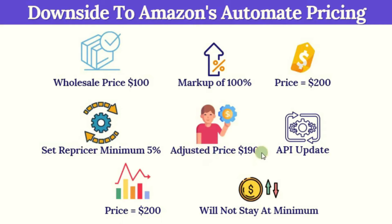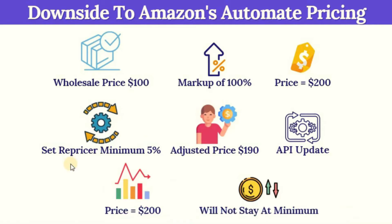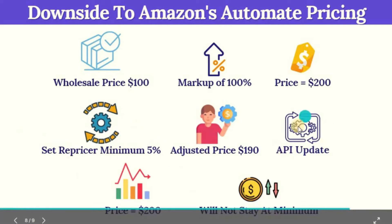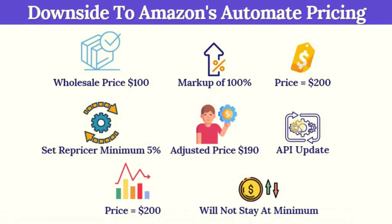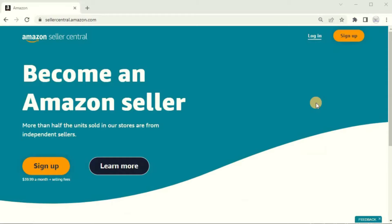But if your API updates — say once every hour or once a day — it's going to shoot your price back up to $200. Amazon doesn't really like that. If your price is going down and then up repeatedly every time your API updates, it's going to mess with the algorithm and you're most likely not going to get the buy box. Now let me show you the repricer on Amazon.